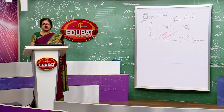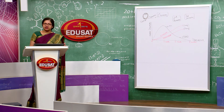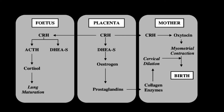Regarding the hormonal sequences associated with parturition: the placenta — as a temporary endocrine gland — secretes CRH (corticotrophin releasing hormone). CRH from the placenta leads to secretion of dehydroepiandrosterone sulfate, which leads to secretion of prostaglandins from the placenta. In the fetus, CRH stimulates lung maturation. In the maternal blood, CRH leads to secretion of oxytocin, which causes myometrial contraction — contraction of the uterine muscular layer — leading to cervical dilation and birth.